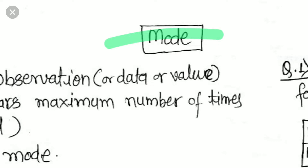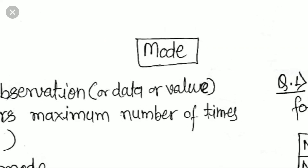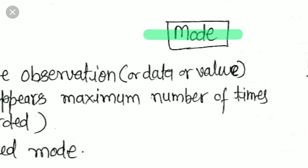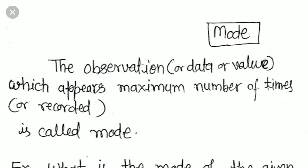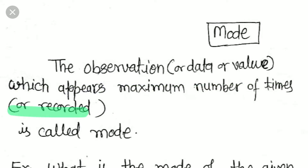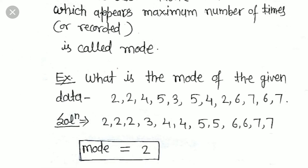If you like the videos, please share them with your friends. Now let's start today's topic. Till now we have discussed mean and median and the basic terminology used in statistics. Today we discuss mode. Generally, mode is the observation or value which appears the maximum number of times, or which is recorded the maximum number of times — that is called mode. Whenever you have some data, the value recorded maximum number of times is the mode.